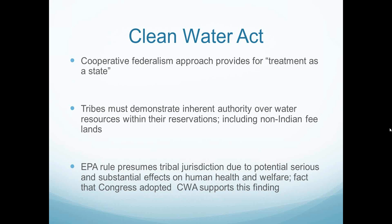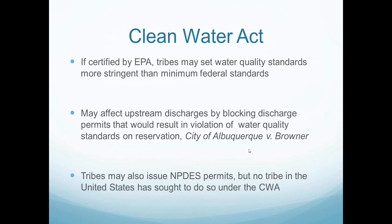Tribes can regulate by setting minimum water quality standards on reservation waters that are more stringent than minimum federal standards and may be more stringent than state standards outside the reservations. Many of you are probably familiar with the Albuquerque v. Browner case, in which a Pueblo south of Albuquerque set water quality standards protective of tribal cultural and religious activities, such that when the city of Albuquerque sought to get a discharge permit upstream, EPA denied it on the ground that it would result in impairment of the tribe's waters on the reservation. The 10th Circuit upheld the treatment-as-a-state status by the Pueblo; the Seventh Circuit and D.C. Circuit have done so as well. The Supreme Court has never considered the issue.